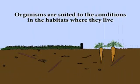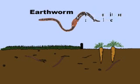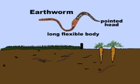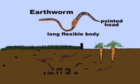Organisms are suited to the conditions and the habitats where they live. For example, an earthworm has a long, flexible body and a pointed head so it can burrow through the soil in search of the rotting plant matter it eats.